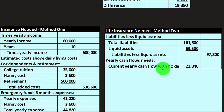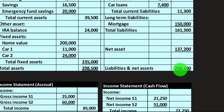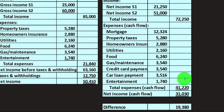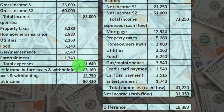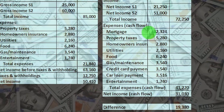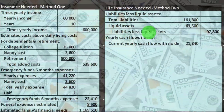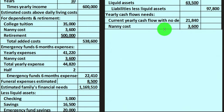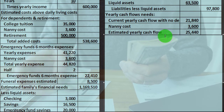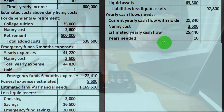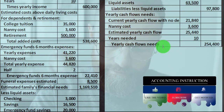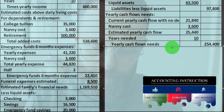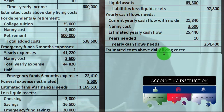On a needs-based approach, after paying off the liabilities I take the $21,840, not my personal income and not the $41,220, because I'm paying off the mortgage. Then I add nanny costs of $3,600, giving estimated yearly cash flow of $25,440. The number of years could be based on years until retirement or until the kids reach 18. So yearly cash flow times years gives us $254,400.